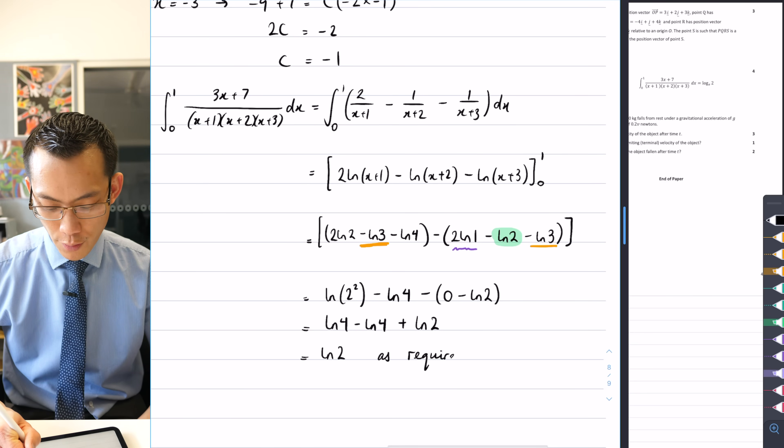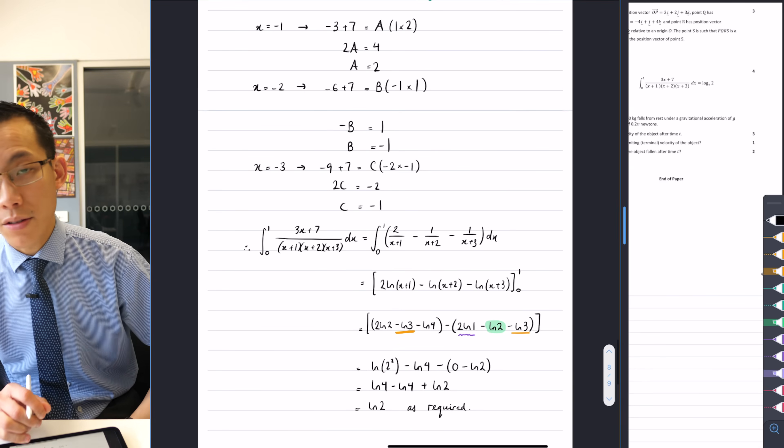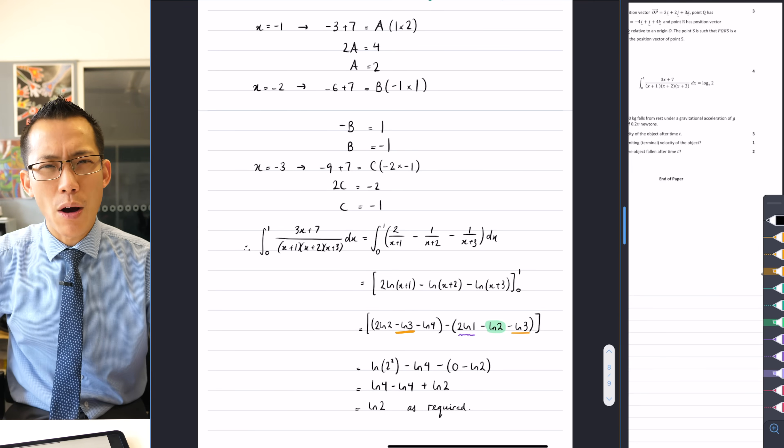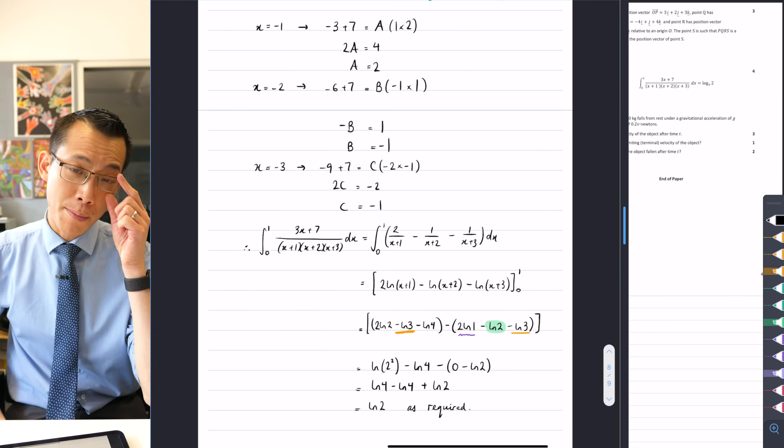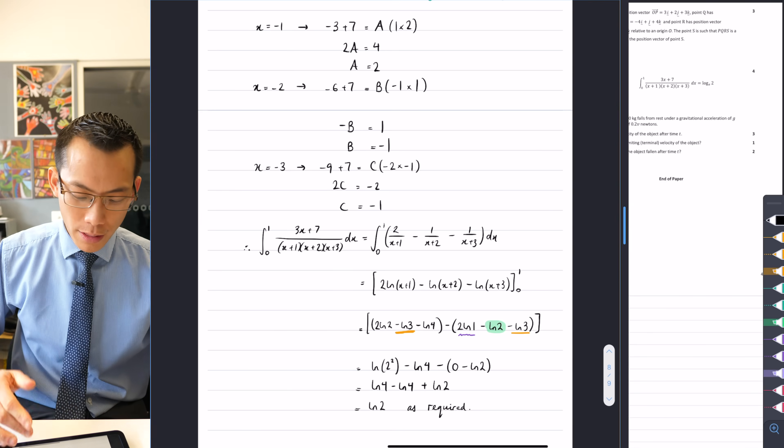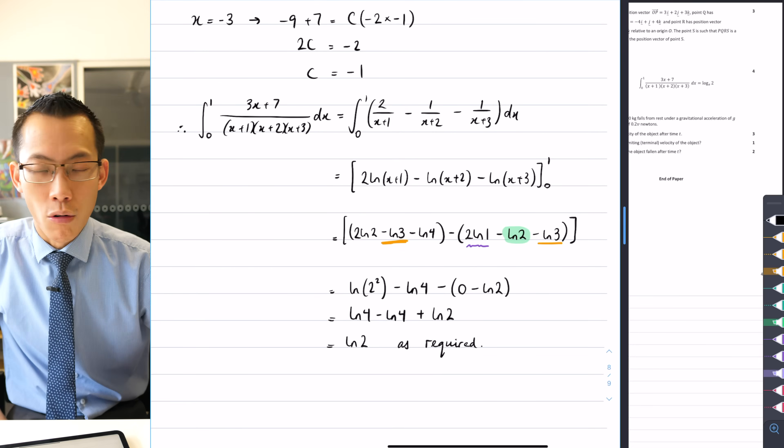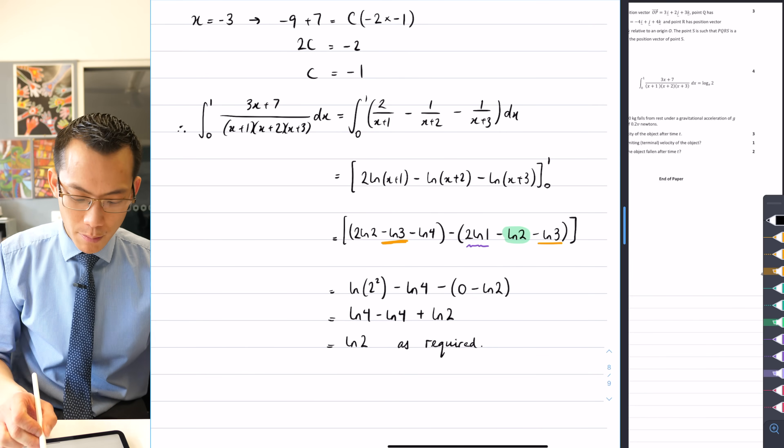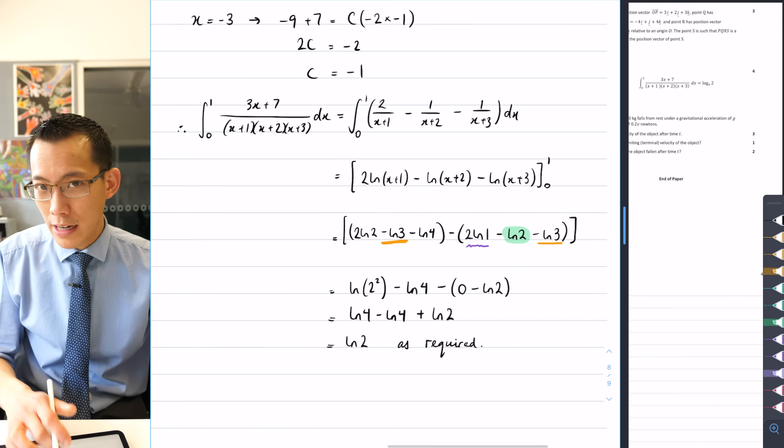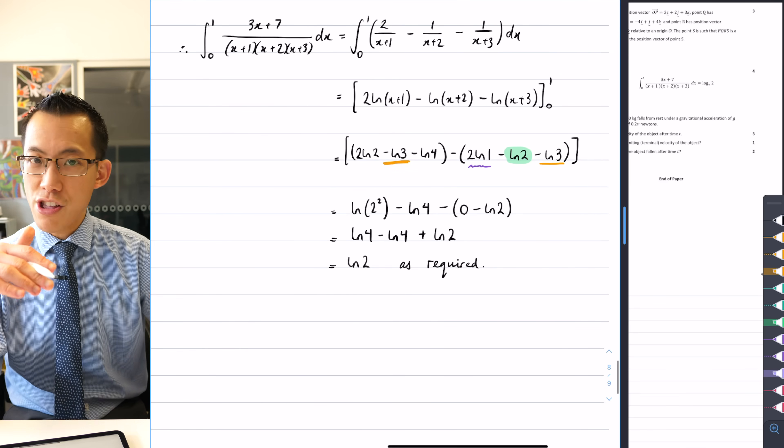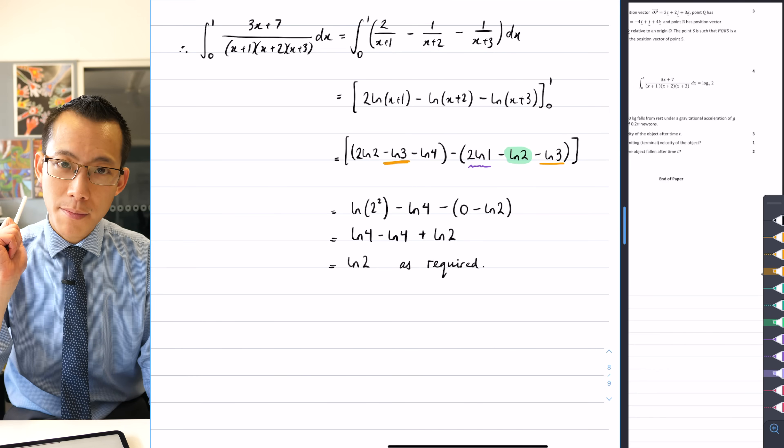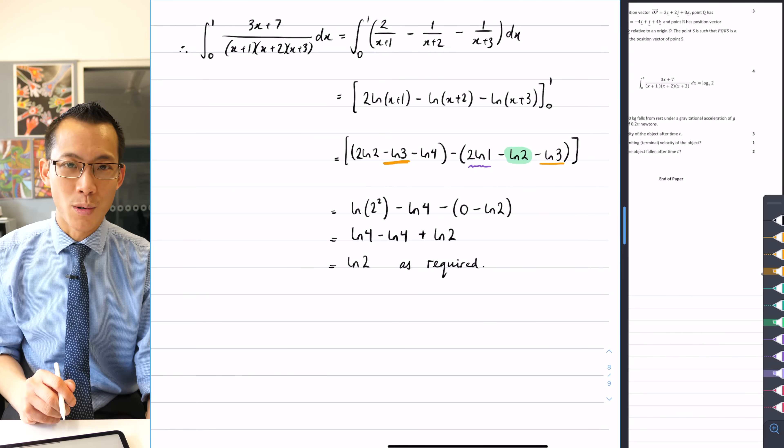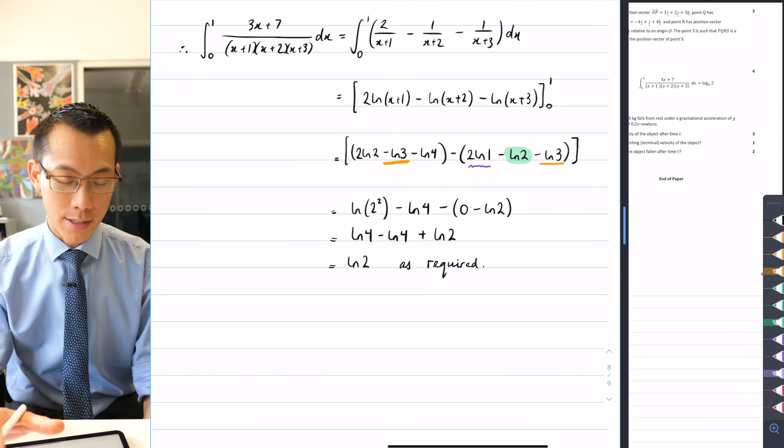So let me make a final note before I leave off of this question. This was a show question. It wasn't find out what this integral is equal to. We told you what it was equal to, it was equal to log 2. Now, what that means is if you made a mistake earlier on by decomposing your partial fractions incorrectly, if you went through this integration and did something wrong, or even actually did something right, but with the wrong numbers because your partial fractions were incorrect, if you ended up at some line around like here or here as you were evaluating, you were substituting in the upper and lower bounds, and you were clearly not getting log 2, that is a massive indicator to you that you should go back and fix up your error.